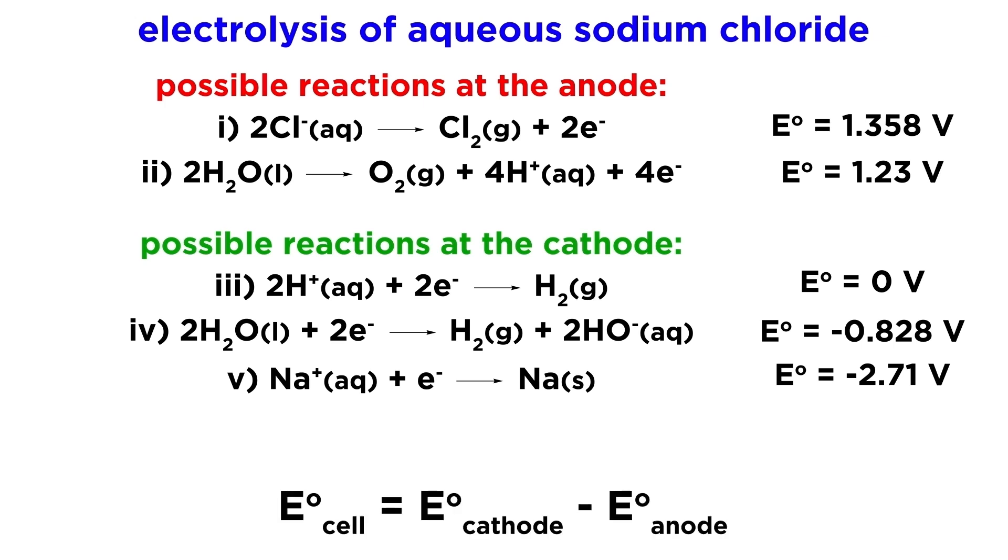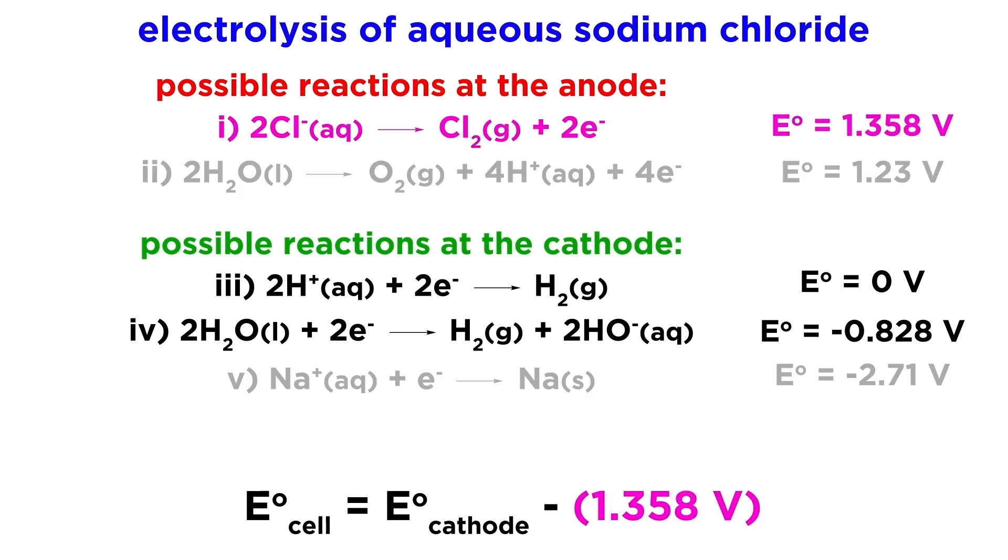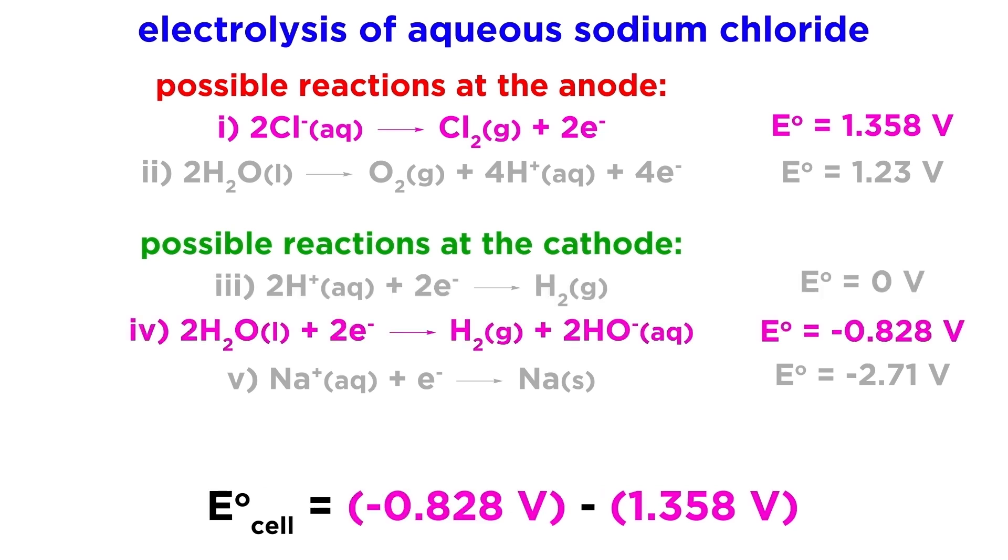Remember that E cell is going to be equal to E cathode minus E anode, and a more positive value for E cell is more favorable. So these two half-reactions, the most positive anode half-reaction and the most negative cathode half-reaction seem unlikely, but it turns out that in actuality oxidation of chloride does occur because of the overpotential of water oxidation, or the difference between the predicted and actual cell voltage, and water is reduced because despite the more negative potential, hydrogen ions are too scarce in neutral solution for the first reaction to be competitive.